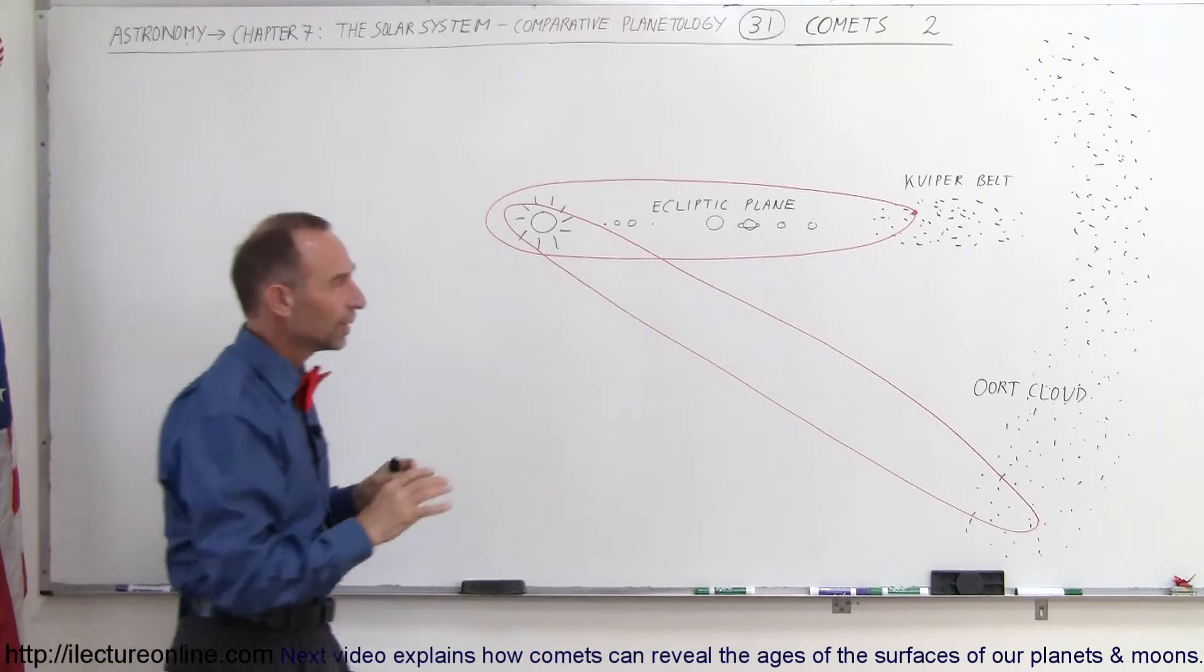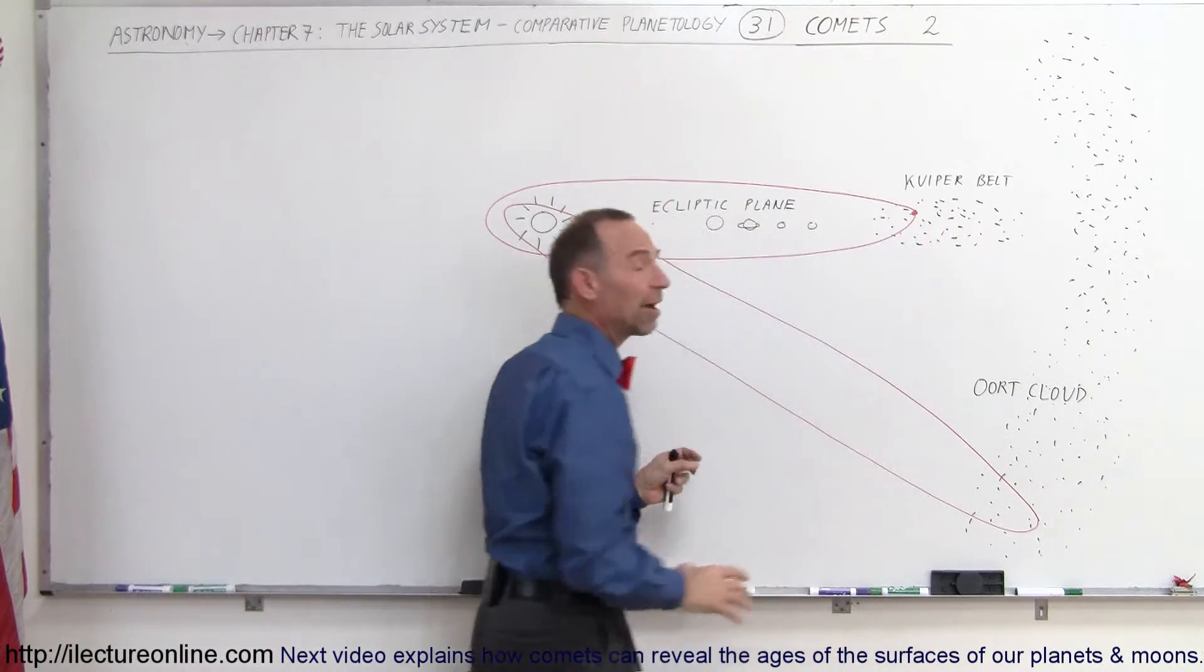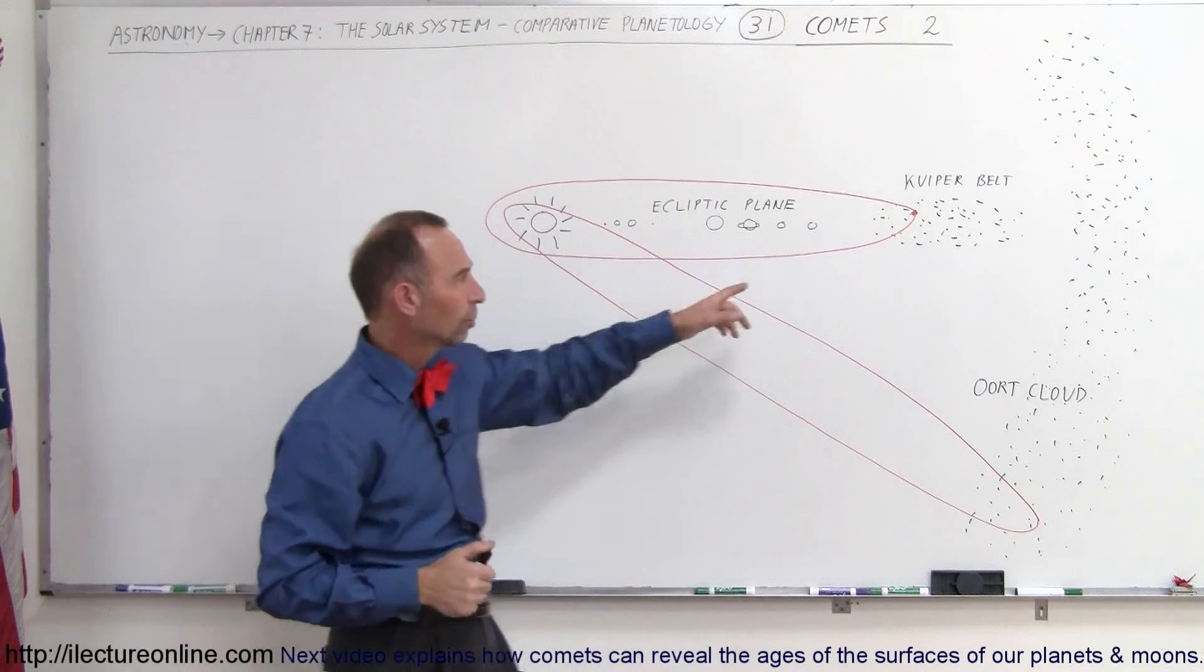And then beyond the solar system, a little bit less known is where we have the Kuiper Belt, and we have what we call the trans-Neptunian objects, such as Pluto.